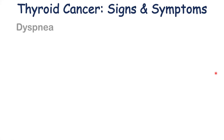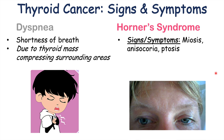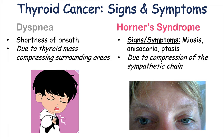Another potential symptom is dyspnea, or shortness of breath, due to the thyroid mass compressing surrounding areas — in particular the trachea — and this can be seen in anaplastic thyroid carcinoma. Horner syndrome is also a potential condition in patients with thyroid cancer. Horner syndrome includes miosis, where the pupils become constricted; anisocoria, where the patient's pupils are different sizes; and ptosis, a drooping eyelid. These signs are due to the thyroid mass growing and compressing on the sympathetic chain.